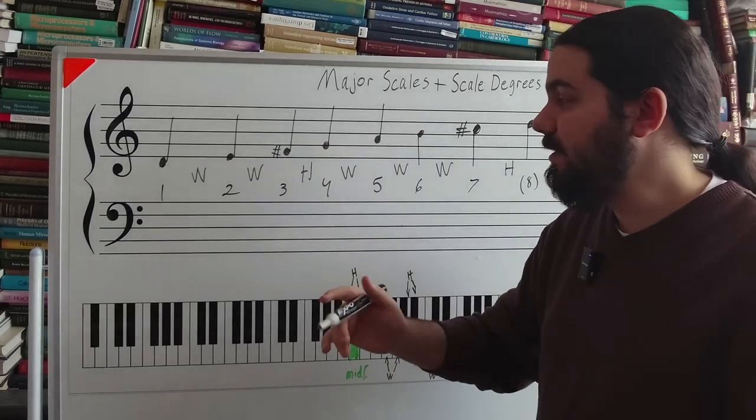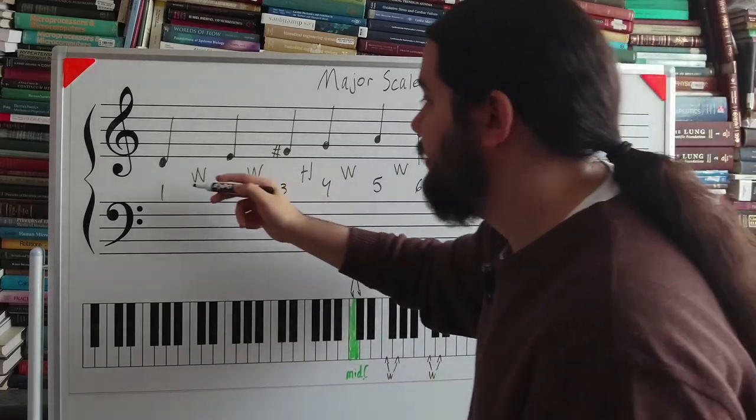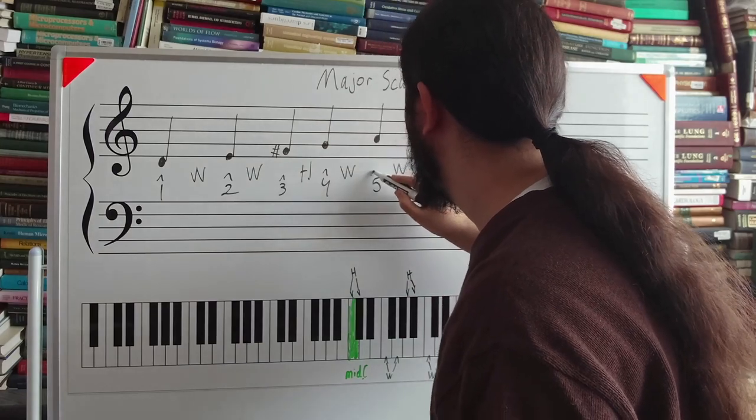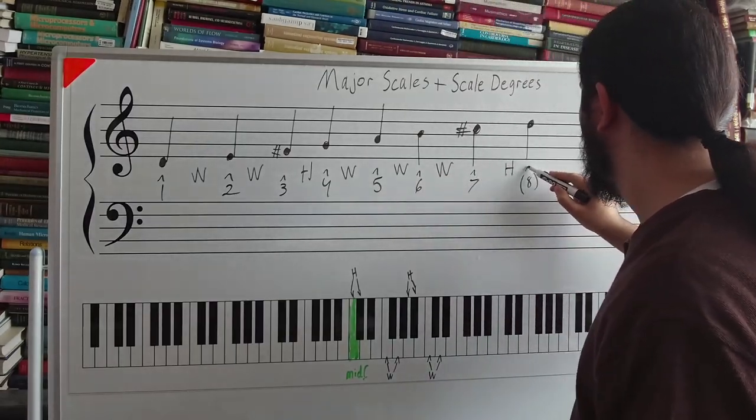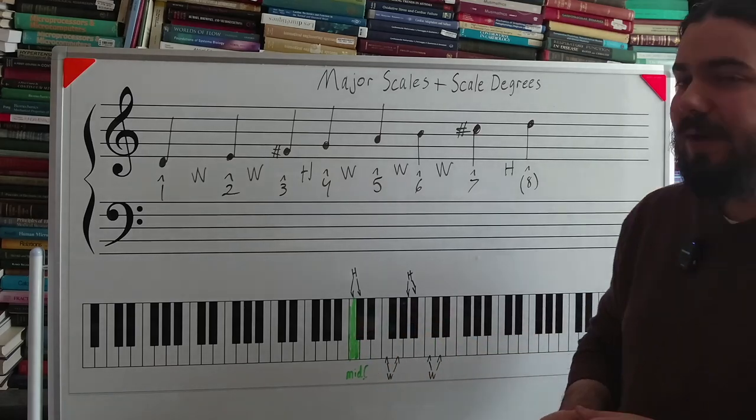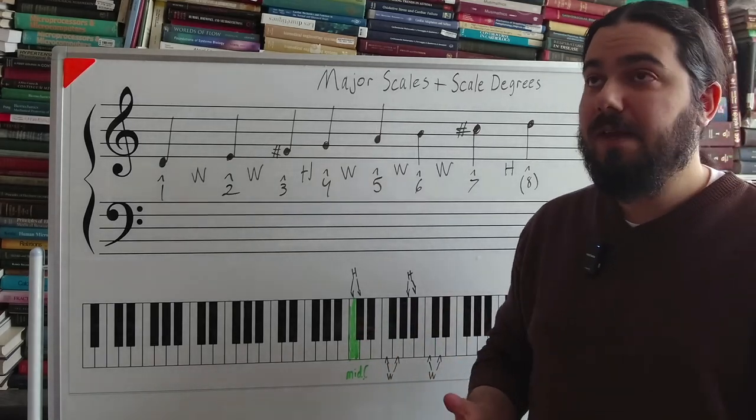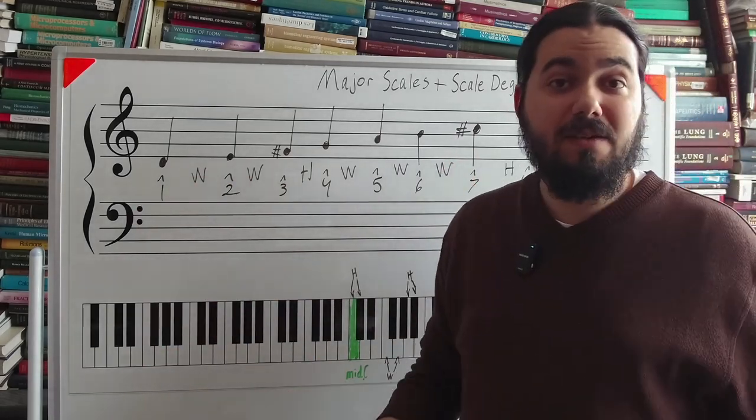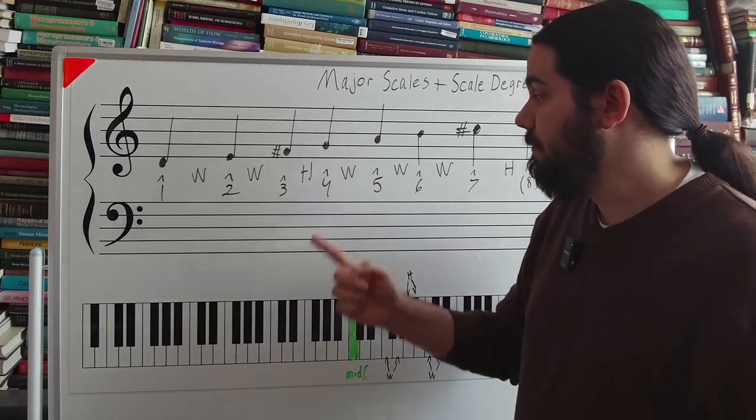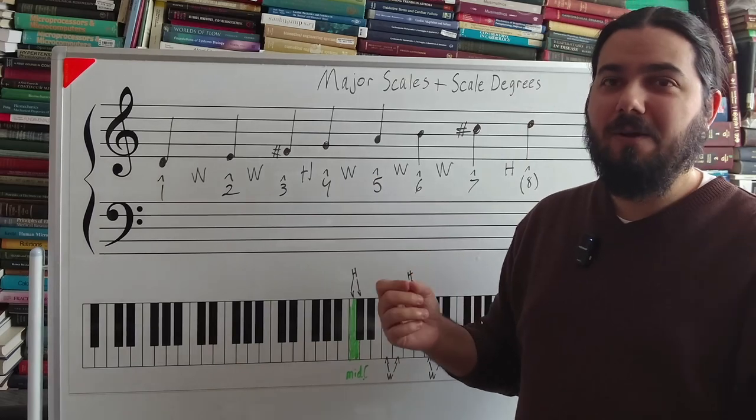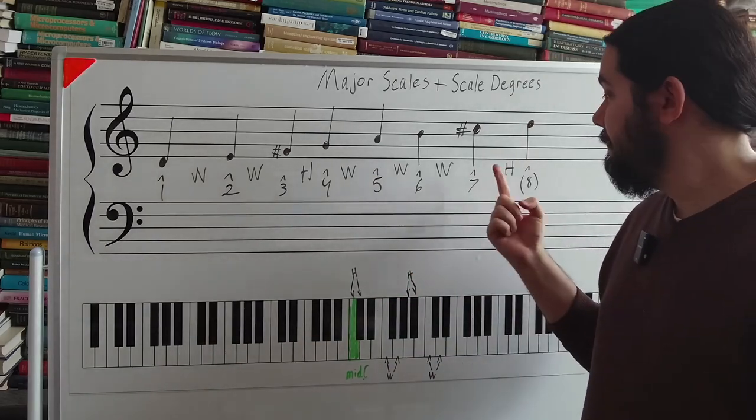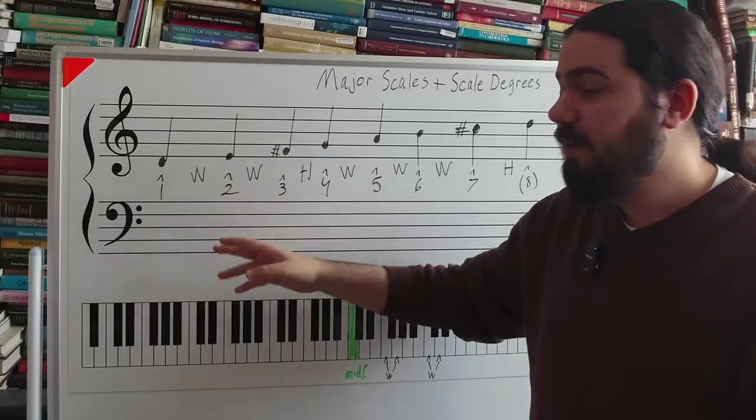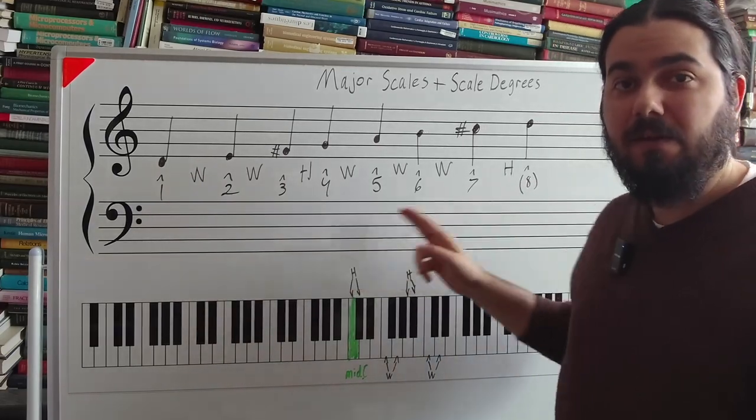And to denote a scale degree, in addition to the numbers, you will also need a little caret. So how this would work is, if you were given a D major scale and someone were to ask you, what is scale degree four in D major? G. How about what's scale degree six in D major? B. What about scale degree two? E. Scale degree one or eight? D or D.